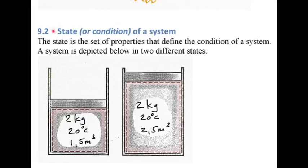We'll be using the word 'state' quite often. State is simply a set of properties that define the condition of a system. In this particular system, there are two kilograms of matter, the temperature is 20 degrees C, and the volume is one and a half cubic meters. The same system, still with two kilograms of mass and still at 20 degrees C, but with an increased volume — that would simply be a different state or condition of the system defined by those properties.